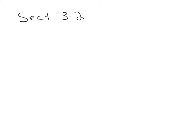We're working in intermediate algebra. This is section 3.2, starts on page 101 of your book if you're trying to follow along. Today we're going to do adding and subtracting polynomials. So let's start with example 1.